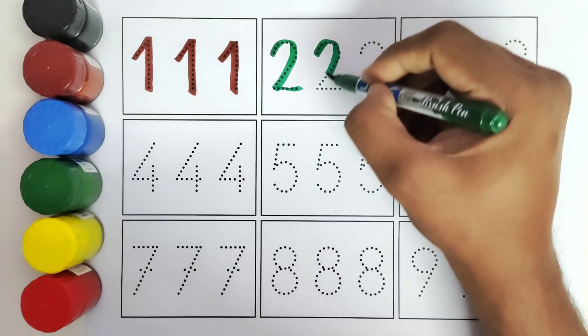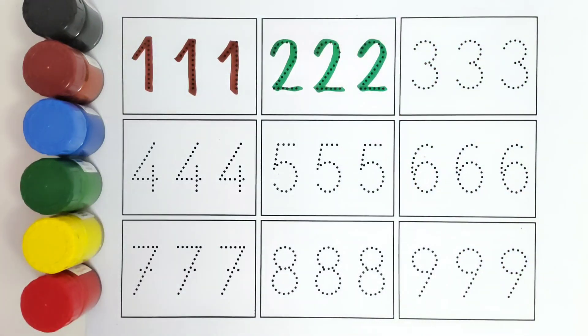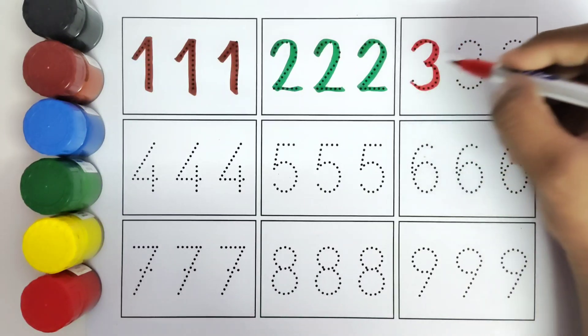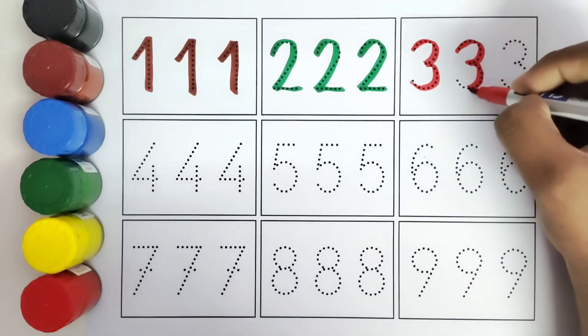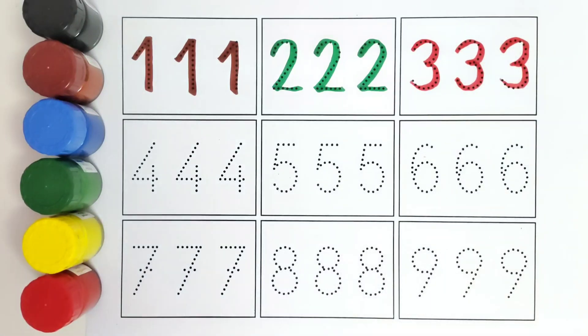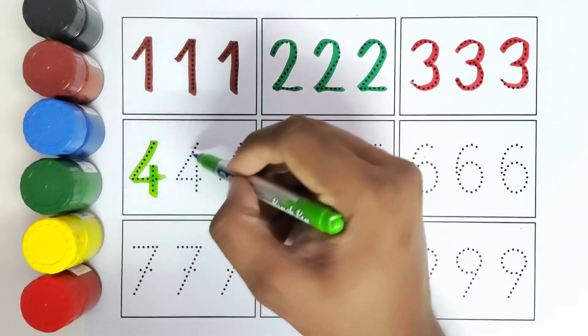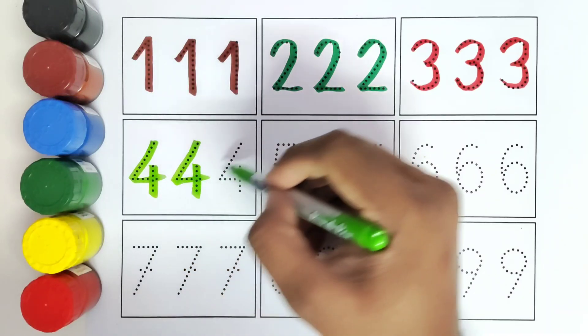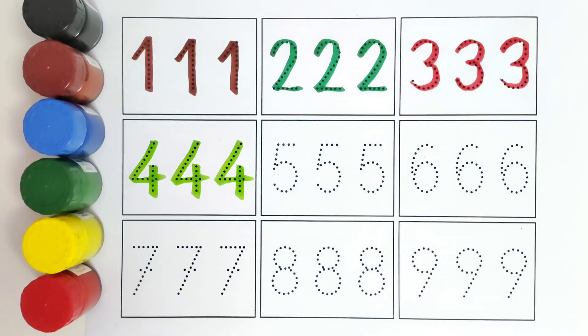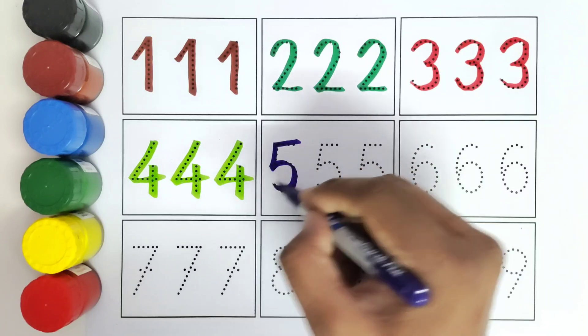Number five, five. This is six, number six, six. This is seven, number seven, seven. This is eight.